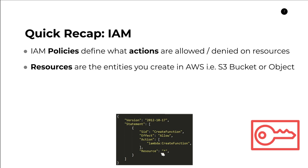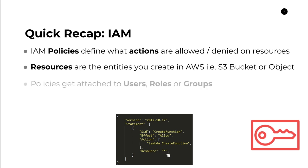So with this policy, if we give this to a particular user, the user will be allowed to call the CreateFunction API. Now a thing to remember with IAM, especially in the context of bucket policies, is that IAM policies get attached to users, roles, or groups.